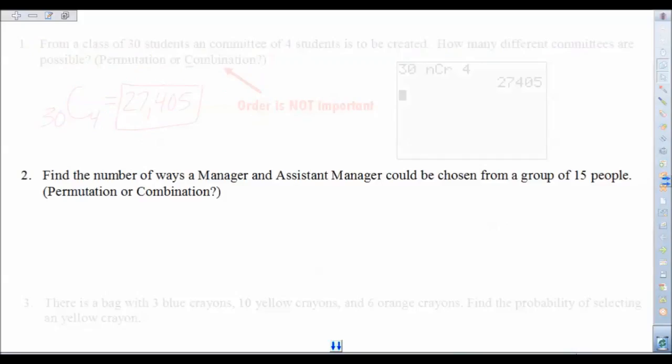Let's move on to the next one. Okay, so looking at number two, find the number of ways a manager and an assistant manager could be chosen from a group of 15 people. Now in this case, is the order that we pick these people matter? Well, yeah, if you're picking a manager and assistant manager from 15 people, there's going to be different responsibilities for being the manager and different responsibilities for being the assistant manager. So the order that you pick these people is going to be important. So what we have here, this time, is a permutation.